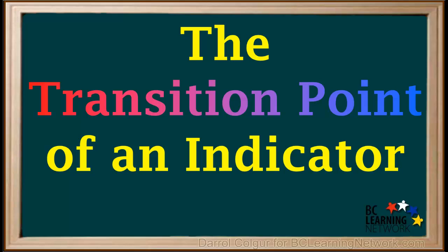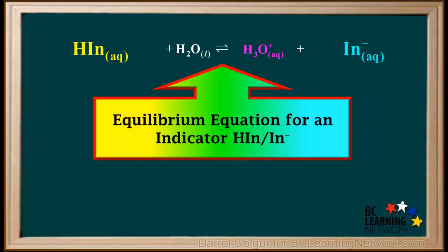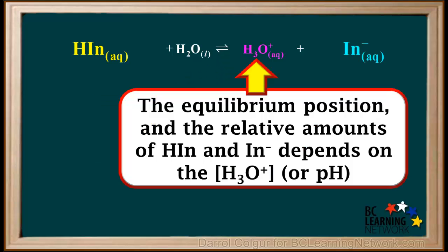We'll take a closer look at the effects of pH on different indicators and focus on a special point called the transition point. Here is the generic equilibrium equation that can represent any indicator. As an example, we'll consider an indicator where the acid form HIn is yellow and the base form In⁻ is blue. Recall that the equilibrium position and the relative amounts of HIn and In⁻ in an indicator solution depends on the concentration of H₃O⁺, or the pH.